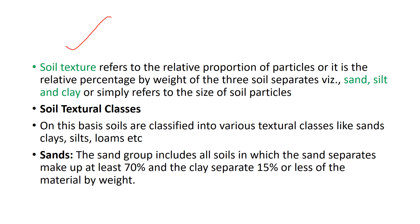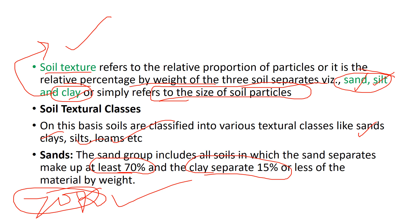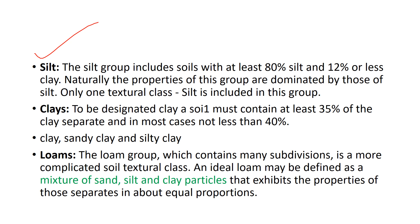Soil texture is defined as the relative percentage by weight of the three separate soil elements — sand, silt, and clay — or simply refers to the size of the soil particles. Based on texture, soils are classified into various textural classes: sand, silt, clay, and loams. Sandy soil contains at least 70% sand with 15% or less clay by weight.